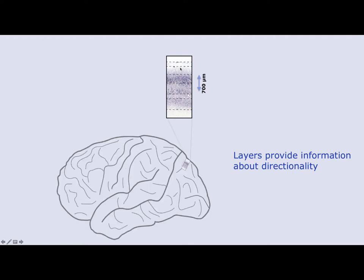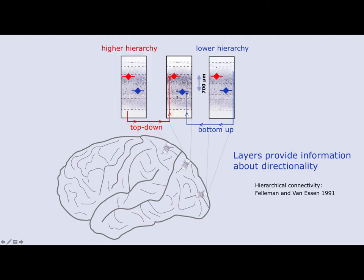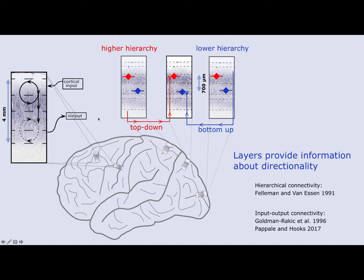The brain consists of many different areas, a lot of them organized in a strictly hierarchical fashion. When a brain area gets feedforward input from a lower area in the hierarchy, this input mostly comes into the middle layers, whereas feedback input from a higher area comes into the upper layers. So by knowing at which layer the activity occurs, we know not only if the area is involved in a task, but also where that activity is coming from. Not the entire brain is strictly hierarchically organized — especially in frontal areas, other layer models such as input-output models are more appropriate.